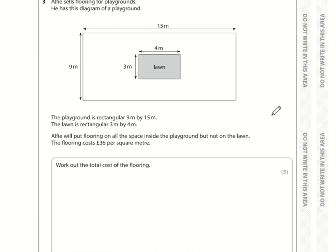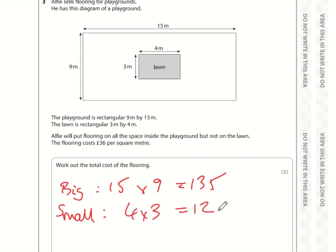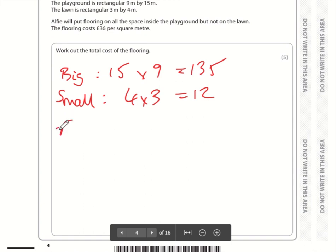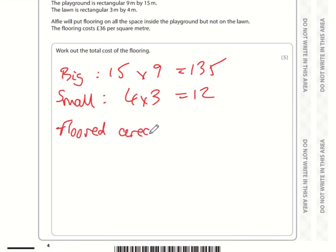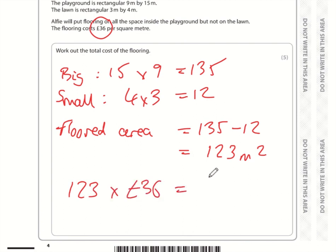For this question we want to work out the area where we're putting the flooring. That is going to be the big rectangle minus the small rectangle. So the big is 15 times by 9, which is 135. The small rectangle is 4 by 3, which is 12. So the floored area is 135 minus 12, which is 123 square metres. It's £36 per square metre, so 123 lots of £36 comes to a total of £4,428.